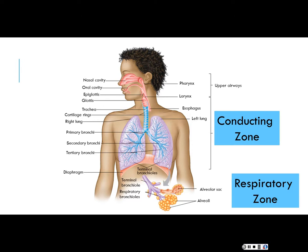The respiratory zone starts at the terminal bronchioles — the very end ones. There may be some exchange there; however, the bulk of exchange does occur in the alveoli. You wouldn't find exchange in larger secondary structures. At the very tiny end bronchioles, there may be some pulmonary capillaries where we can see some of that exchange.